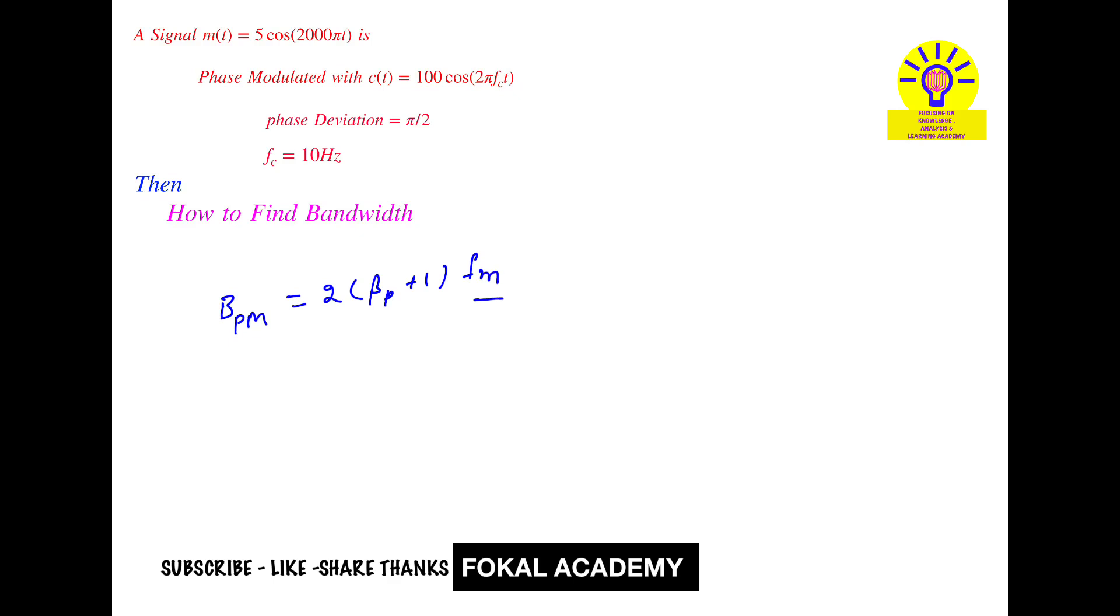So here fm is message frequency. Here Am cos(omega_m t), omega_m is equal to 2000 pi, and omega_m is 2 pi fm. That's equal to 2000 pi, pi cancels. So from this you get message frequency fm = 1000.